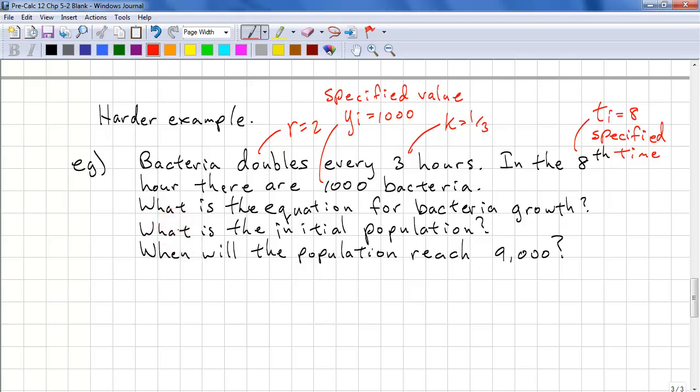And we need to answer these questions. What is the equation for the bacteria growth? What is the initial population? And when will the population reach 9,000? So using our values that we picked off, y of t equals 1,000 times 2 raised to the power of 1 third times t minus 8. So our initial value is y of 0. 1,000 times 2 to the power of 1 third of 0 minus 8, and that is roughly 157 bacteria.